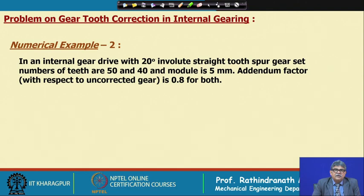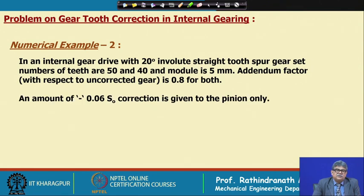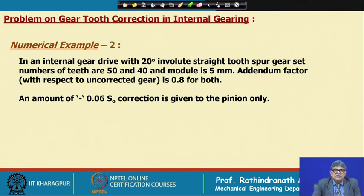Here, 50 and 40 teeth means the ring gear has 50 teeth and the pinion has 40 teeth, with module 5 and 20-degree involute profile. A correction of minus 0.06 S0 is given to the pinion only. S0 correction means there will be no change in center distance, and the minus correction means the cutter is deepened, so the pinion tooth will be thinner.